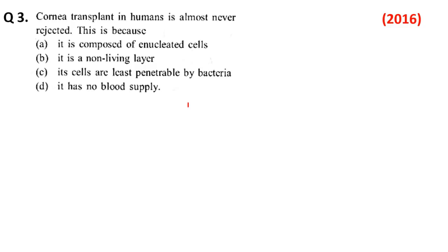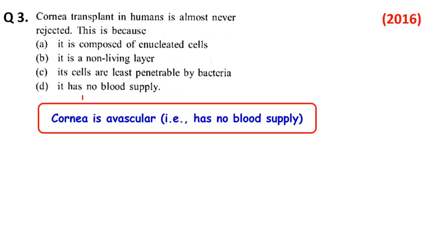Question number 3: Cornea transplant in humans is almost never rejected। Cornea को जब human में transplant किया जाता है तो वो कभी rejected नहीं होते। जैसे कि किसी भी body part को transplant करने पर rejection आता है तो immunosuppressive drugs देकर immune system को suppress करते हैं, वट cornea के transplantation में ऐसा नहीं करना पड़ता। Options: A — composed of enucleated cells, B — non-living layer, C — cells are impenetrable by bacteria, D — it has no blood supply। Cornea avascular होती है, has no blood supply, and because of that ना WBC होगा ना RBC, WBC ही defense mechanism perform करता है via B lymphocyte, T lymphocyte। तो जब vascularization ही नहीं है, इसीलिए cornea transplantation में immune suppression की जरूरत नहीं। Option D is right here।